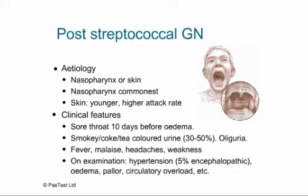On examination, these children are inevitably hypertensive, reflecting circulatory overload, and around 5% are frankly encephalopathic. They have edema, pallor, and features of circulatory overload such as raised JVP.